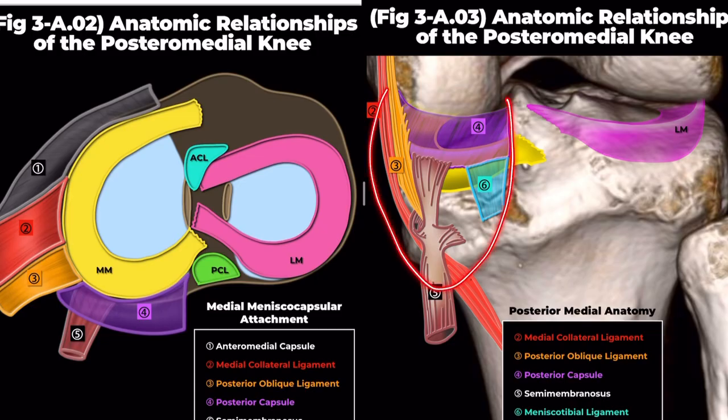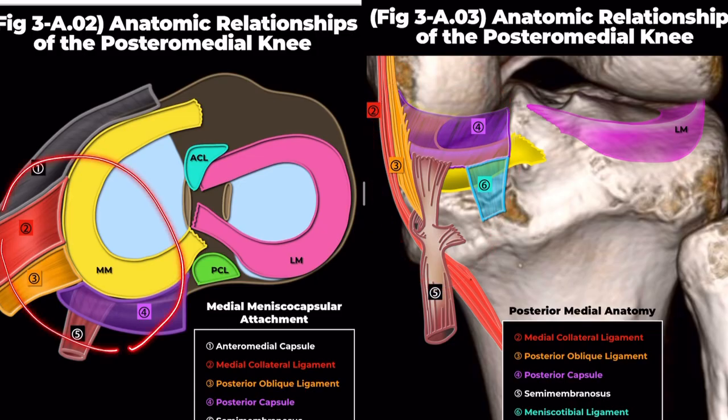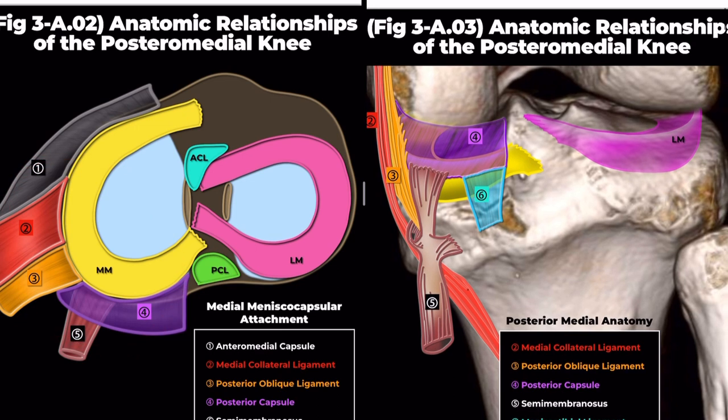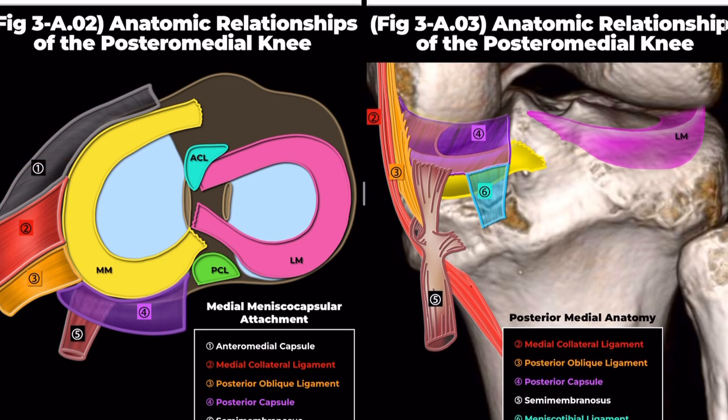Additional medial meniscus attachments, acting as secondary knee stabilizers, include the deep medial collateral ligament, posterior oblique ligament, and semimembranosus tendon.